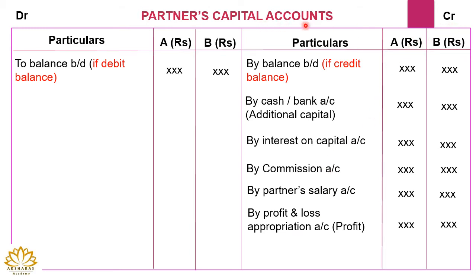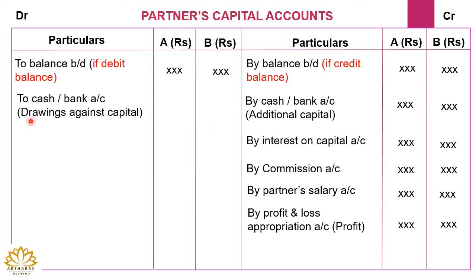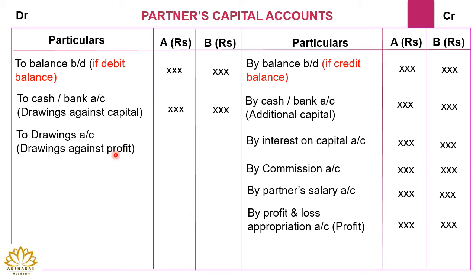Now for the debit side items: the first item is drawings against capital, where partners withdraw cash from their capital for personal use, reducing the capital value. This is debited to the partners capital account, written as 'To Cash or Bank.' A's drawings against capital are shown under A's column and B's under B's column. Next is drawings against profit — out of the profit the partners withdraw cash — this is also debited to the partners capital account.